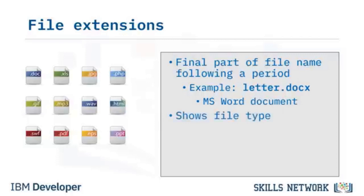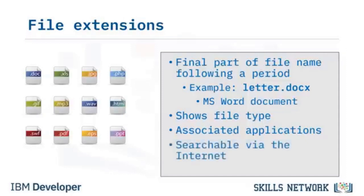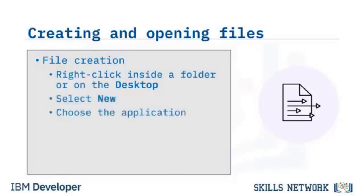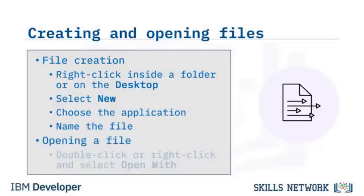An extension is the final part of the file name that follows a period — for example, Letter.docx. The extension .docx indicates the file Letter is a MS Word document. The file extension shows the file type and which applications can be associated with different actions such as Open, Edit, and Print. To create a file, right-click inside a folder or on the desktop, select New, and then select the application you want, then name the file. To open a file, either double-click it or right-click it, select Open With, and select the appropriate application.